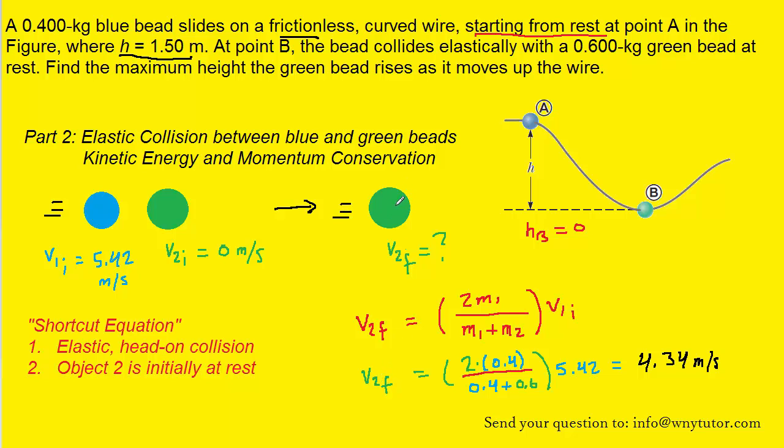So here we have the green bead, and it's now moving at 4.34 meters per second, and it's going to be propelled up the ramp, so we'll move on to part three now.